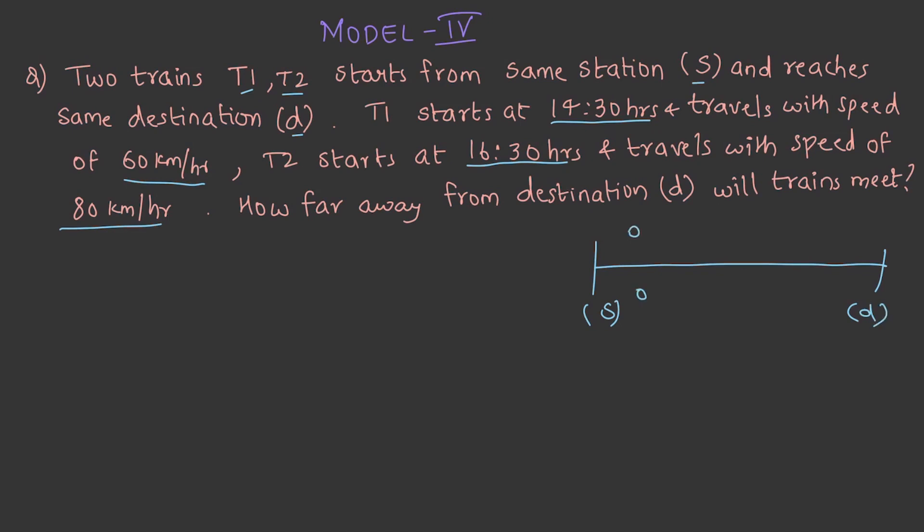Train T1, train T2. It starts at 1430 hours and this starts at 1630 hours. And this travels with 60 kilometers per hour and this travels with 80 kilometers per hour. So, after reaching away from the destination, where do two trains meet? Is the asked question. So, let us solve this.